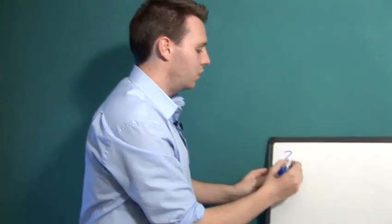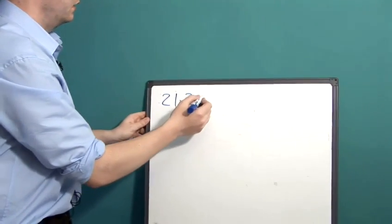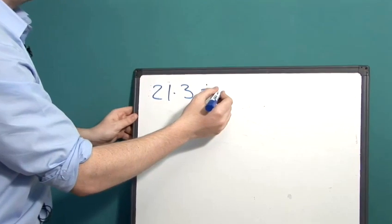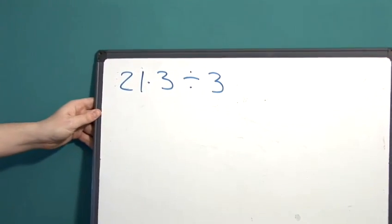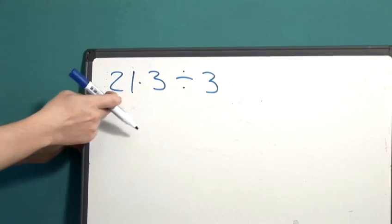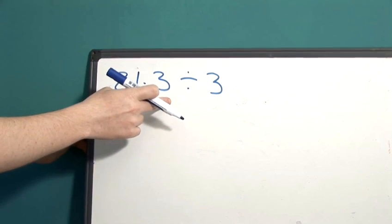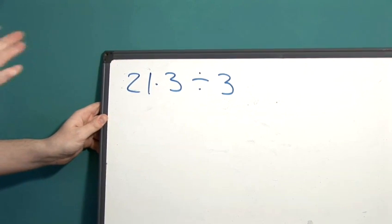Let's say you want to divide 21.3 by 3. Now, this looks really daunting, but actually we can do something really simple to get over that.